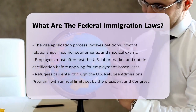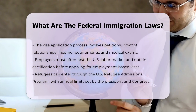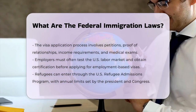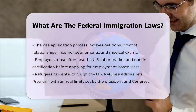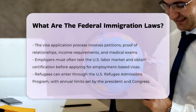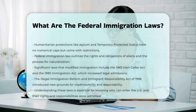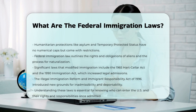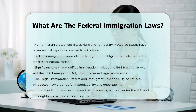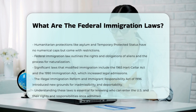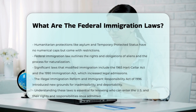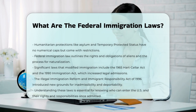Federal immigration law also covers the rights and obligations of aliens in the U.S. and provides the means for aliens to become legally naturalized citizens. Over the years, several laws have modified the immigration system. For instance, the 1965 Immigration and Nationality Act, also known as the Hart-Celler Act, abolished the national origins quota system and focused on family relationships and employer sponsorships.